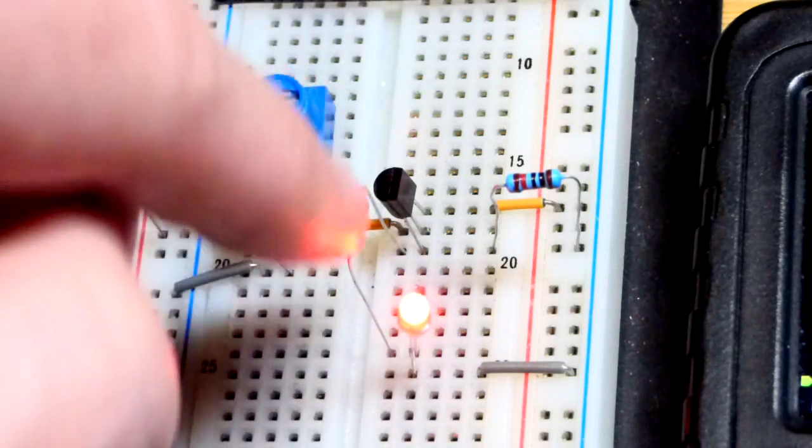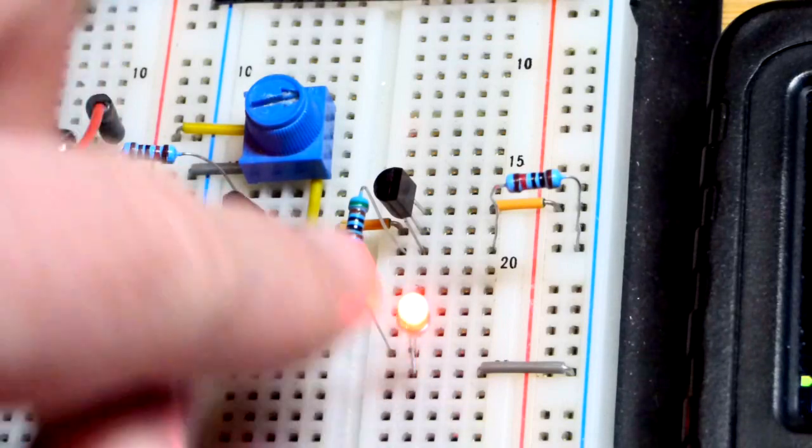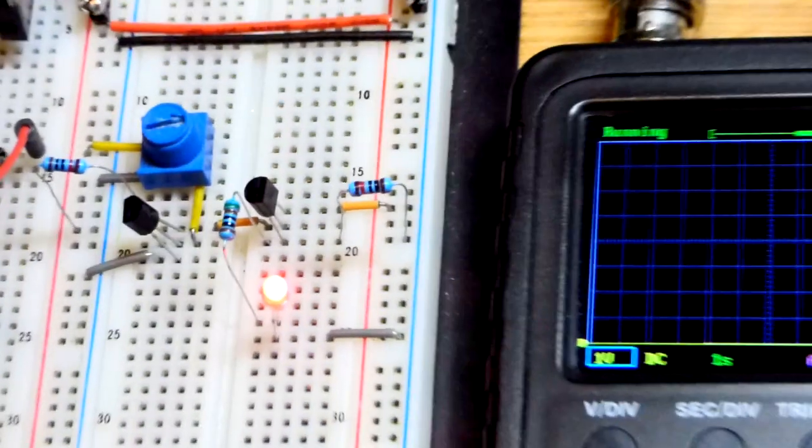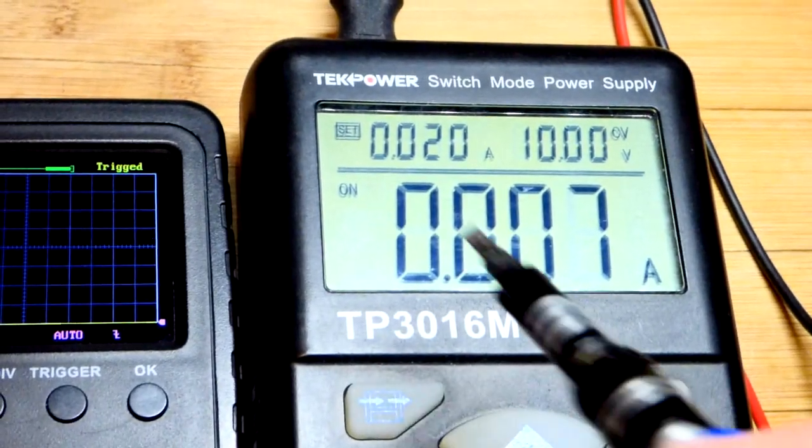So for every volt across it, we're going to get about 2 milliamps of current. Remember, the LED drops about 2 volts since it's red, approximately 2 volts. But in any case, we'll zoom back.